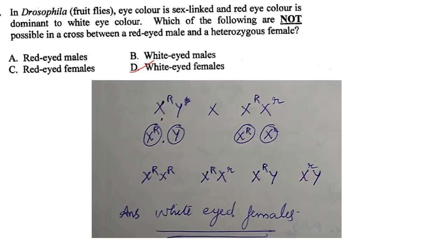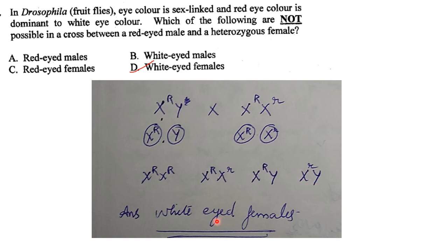In Drosophila, eye color is sex-linked and red eye color is dominant over white. In the cross between a red-eyed male (X^R Y) and a heterozygous female (X^R X^r), offspring include red-eyed females, red-eyed males and white-eyed males. White-eyed females are not possible in this cross. Answer is option D.